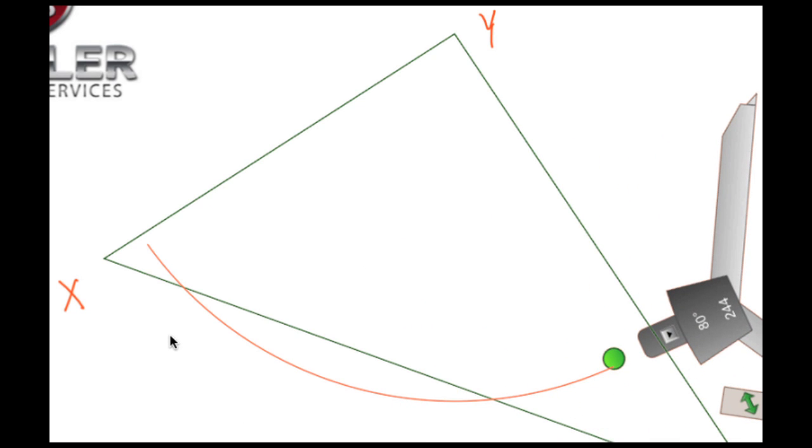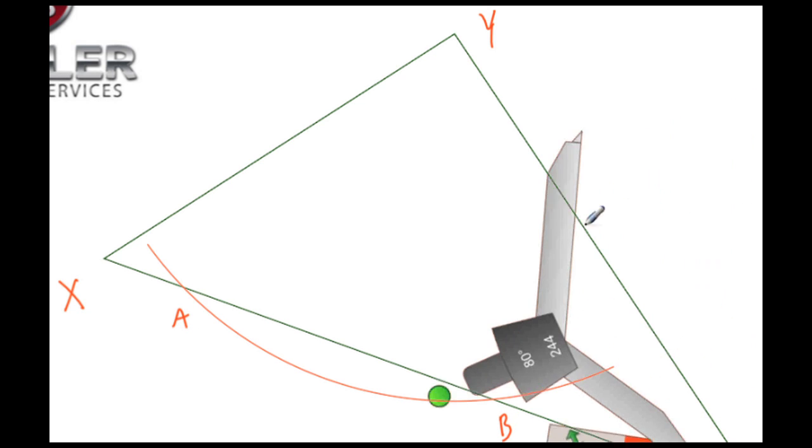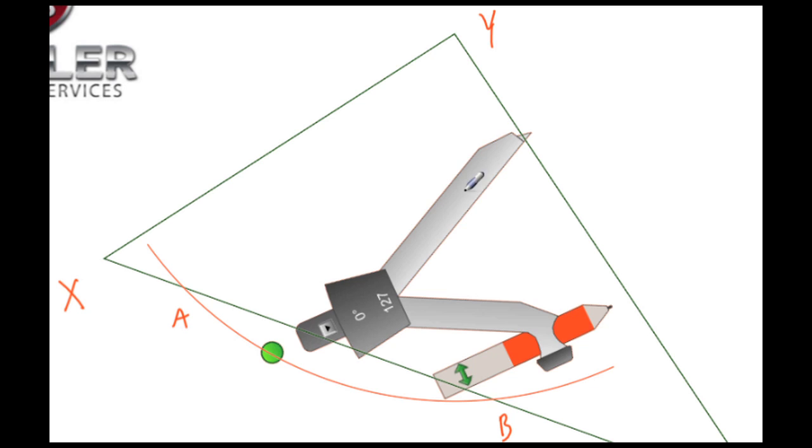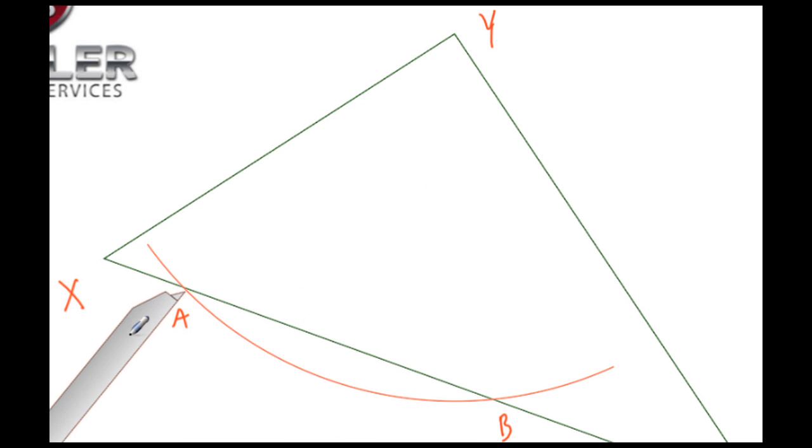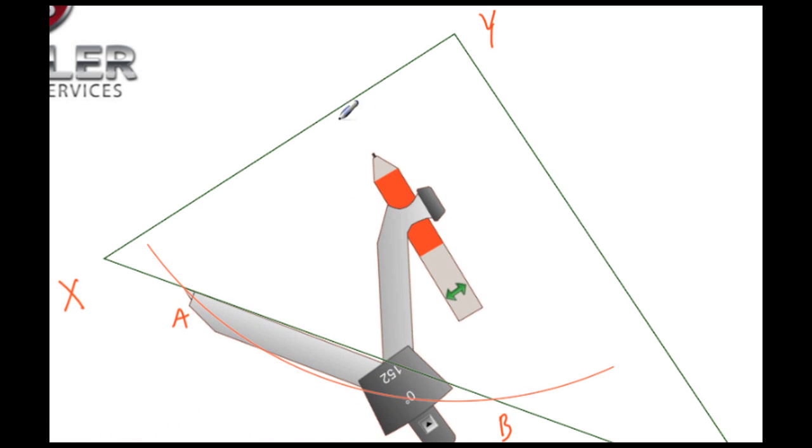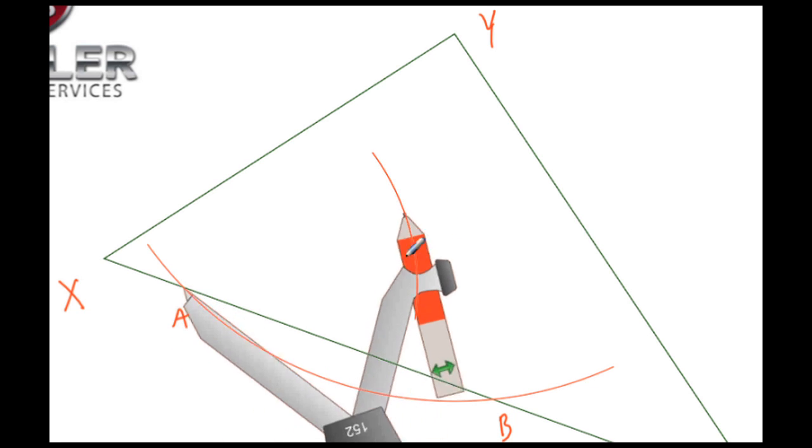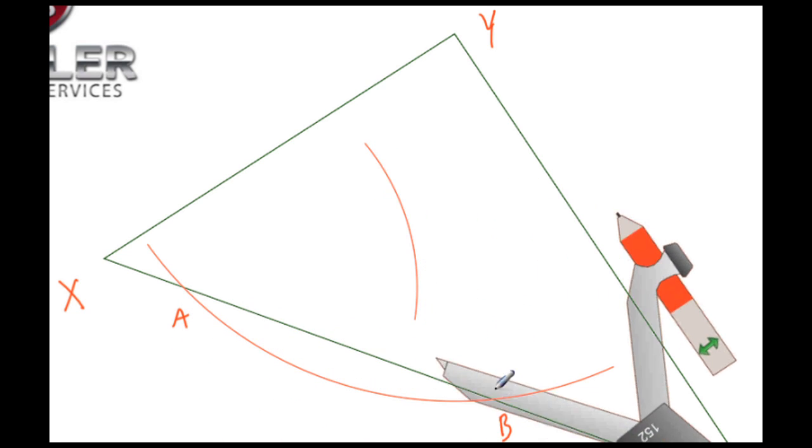What we need to do now is label these two intersections A and B. Next, we need to take the compass and place the pointy end on intersection A. We need to make sure that the radius is more than half of the length of intersection AB, and that appears to be the case. Now let's draw an arc.